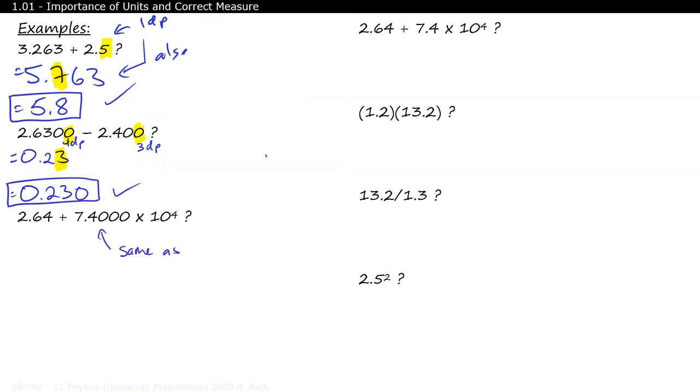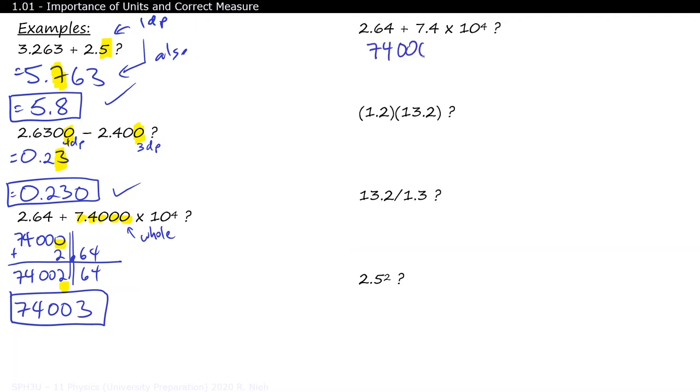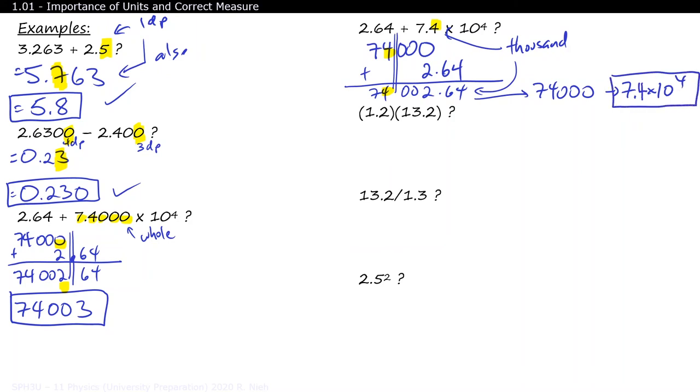If we add 2.64 with 7.400 times 10 to the 4, first we need to expand out the scientific notation. 7.400 translates to 74,000 rounded to the nearest whole. So we're adding a number to the nearest whole with a measurement to the nearest hundredth. So our final answer should also be rounded to the nearest whole. The next example is different. This time around, we're adding a measurement that is rounded to the nearest hundredth with a measurement that's rounded to the nearest thousands. Which one's less precise? Obviously the measurement to the nearest thousands. So 74,000 plus a smidget will still give us roughly 74,000. However, we can't write it out as 7400 because we don't know if it's 2 sig fig or 5 sig fig, so how about we convert it into scientific notation?